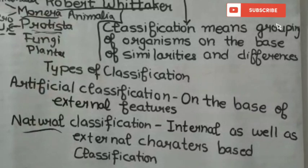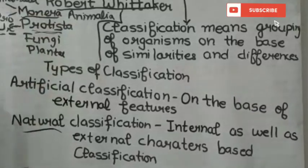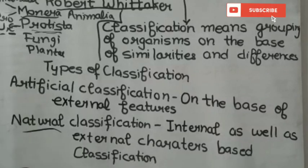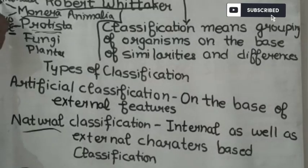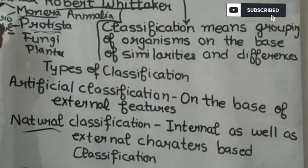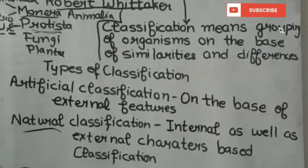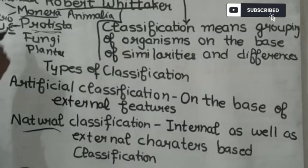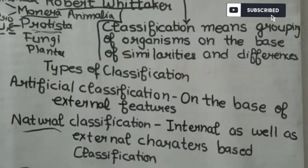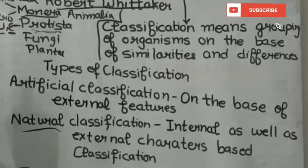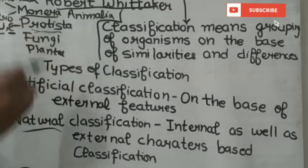In Kingdom Monera, all organisms are unicellular — meaning they have only 1 cell — and prokaryotic, meaning the nucleus is primitive and not well developed. For example, bacteria come under Kingdom Monera.